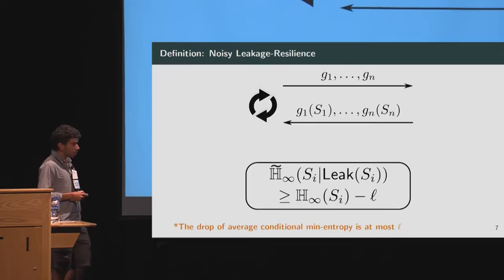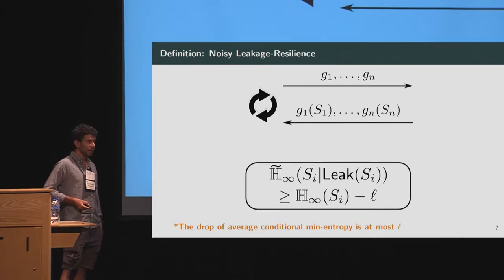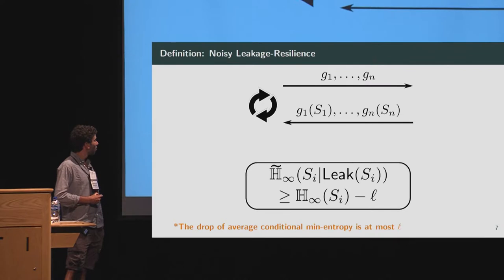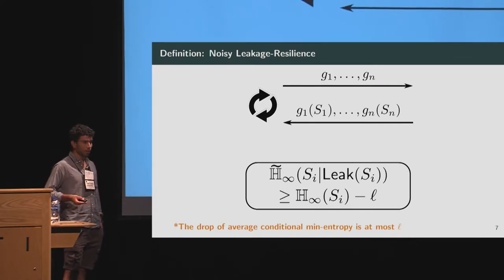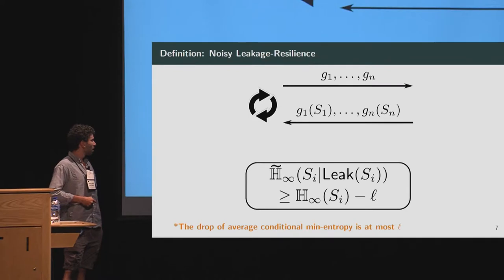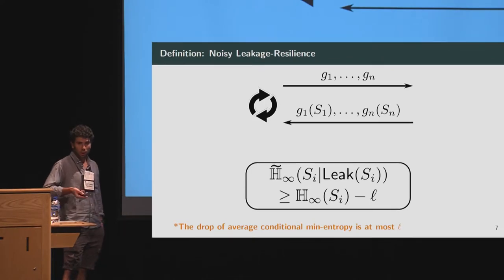We also want leakage resilience. The kind we consider is the noisy leakage model, where the adversary can leak partial information about the shares. The only restriction on the leakage function is on the average conditional min-entropy of the shares given the leakage — this must remain high enough.